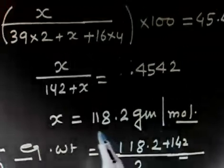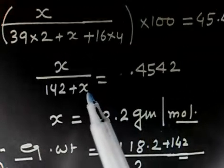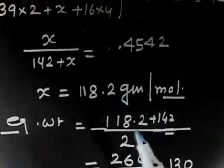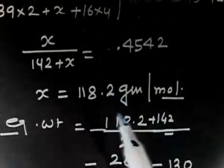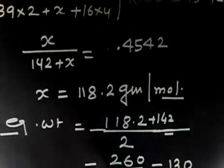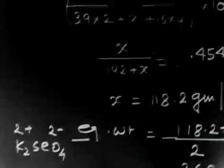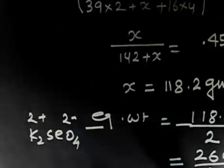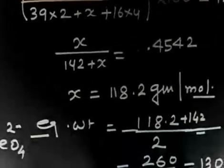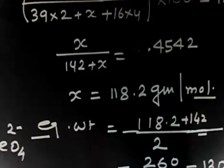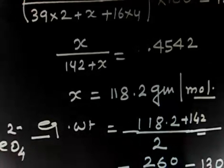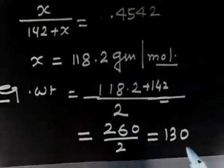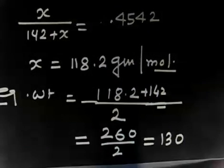With selenium's atomic weight as 118.2, the molecular weight of K2SeO4 is 118.2 plus 142 (which accounts for 2K and 4O), giving 260. The total positive charge is 2+ (or equivalently 2−), so we divide by 2. The equivalent weight is therefore 260 divided by 2, which equals 130 grams per mole.